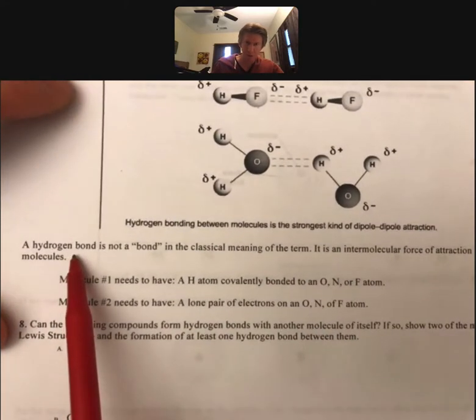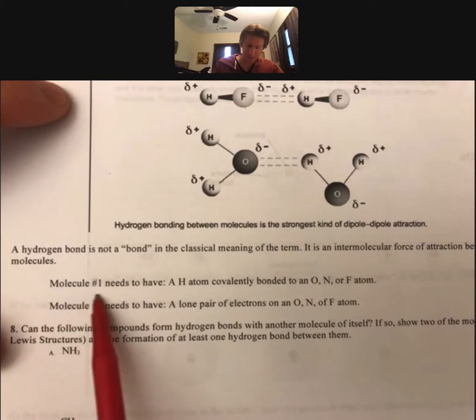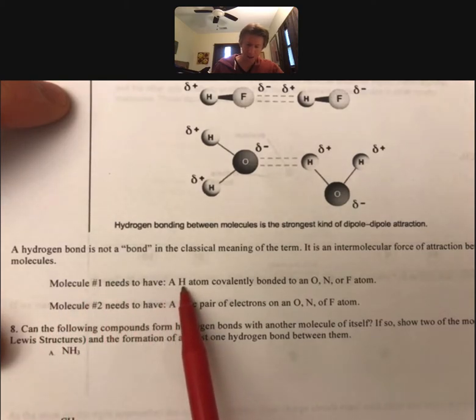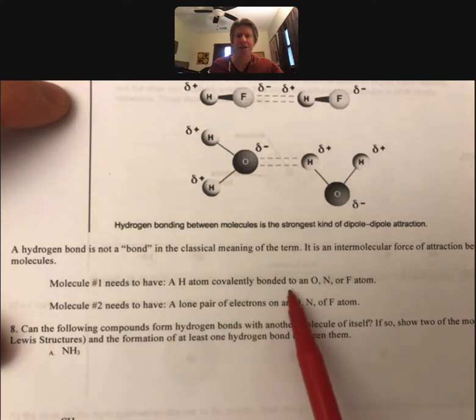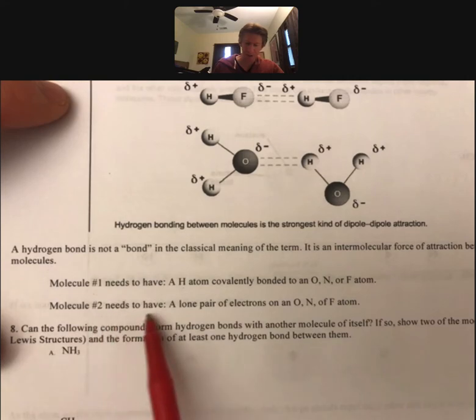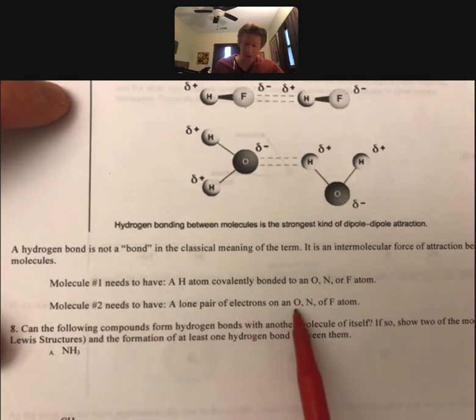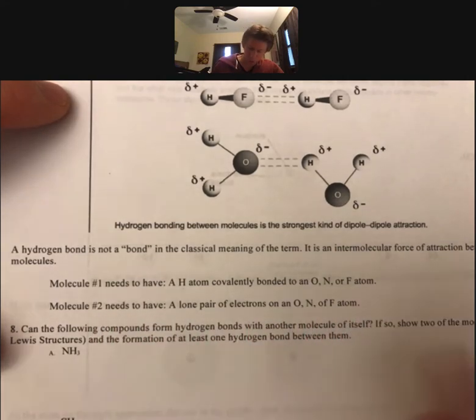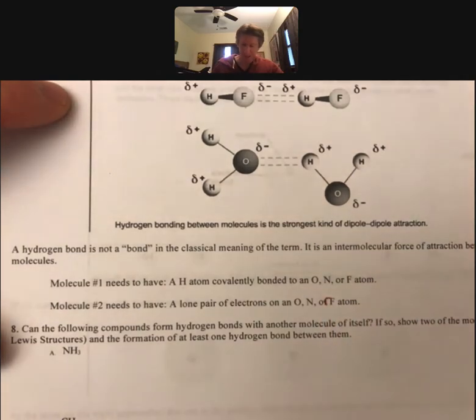And so the requirements for a hydrogen bond is that one of the molecules, we'll call it molecule one, needs to have a hydrogen atom covalently bonded to oxygen, nitrogen, or fluorine. The other molecule needs to have a lone pair of electrons on an oxygen, nitrogen, or fluorine atom.